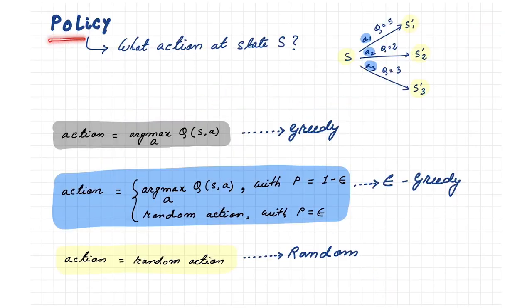Now in this case, the rule that decides a particular action based on the Q values is called the policy. For instance, a greedy policy always selects the action having the highest Q value at any state. Similarly, an epsilon greedy policy will select most of the time the highest Q value action, but sometimes selects any action randomly with a small probability epsilon.